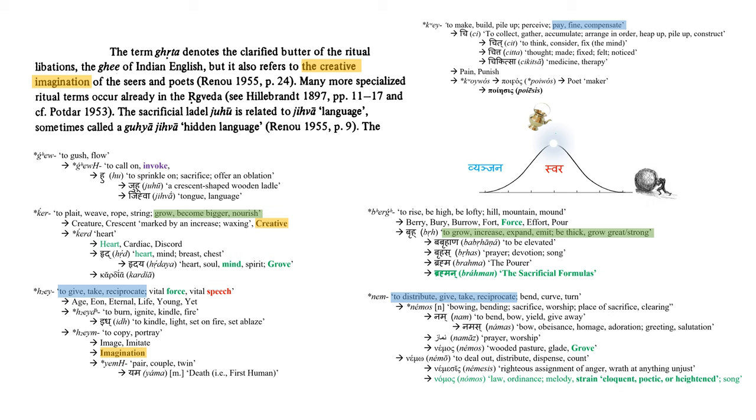Now, the root also gives us the Greek word nemo - to deal out, distribute, dispense, and count - from which we get the word nemesis, meaning a righteous assignment of anger and wrath at anything unjust, and the word nomos - law, ordinance, a melody, or a strain, that is something eloquent, poetic, or heightened, a song. Thus, poetry and imagination, as far as the roots are concerned, is far from being a passive activity of rumination. It defines for us laws, ordinances, and the dispenser of divine justice, which in today's world is no less true, for it will take divine union of hubris and nemesis to scan speech to mark out the sociopaths who are unaware of their impostures, administrating away injustices in the guise of ascetic speech.